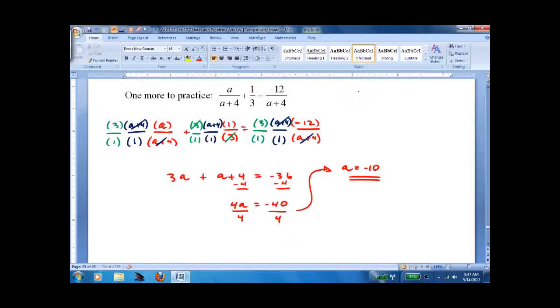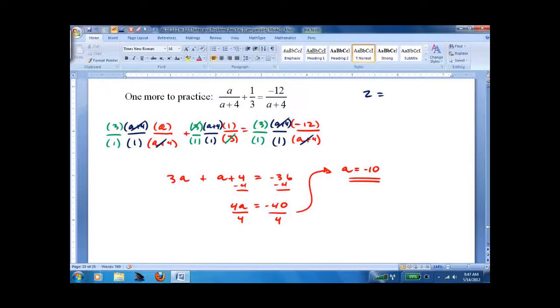I'm going to erase it on the fly. 5 thirds plus 1 third is 6 thirds. That gives me 2. And on this side, negative 10 plus 4, negative 6. Negative 12 over 6 is 2. I can do that in my head. You might want to use a calculator and write it out. That's it.